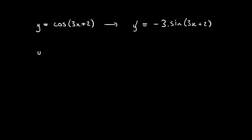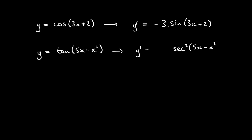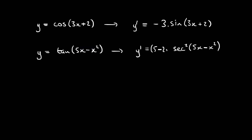Let's try another one. We've got y is equal to tan of 5x minus x squared. If we were to differentiate this, then the function on the outside, the big function tan, gets differentiated to become sec squared. So we get sec squared of 5x minus x squared. And then we differentiate the function on the inside, which gives us 5 minus 2x. And so we multiply through by 5 minus 2x.